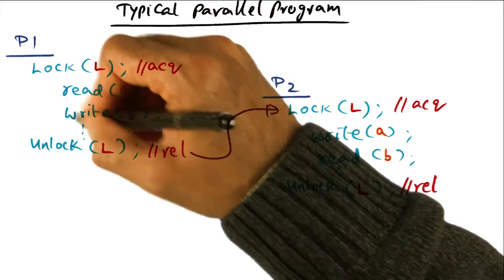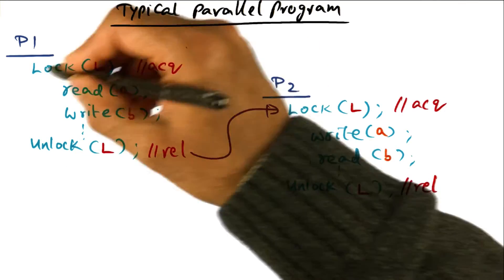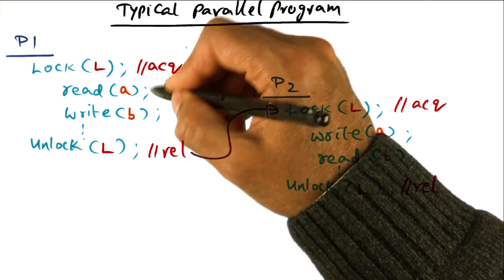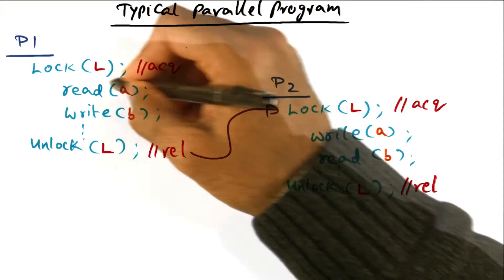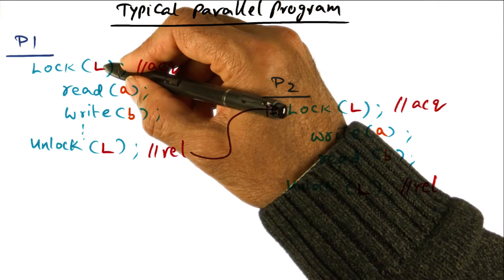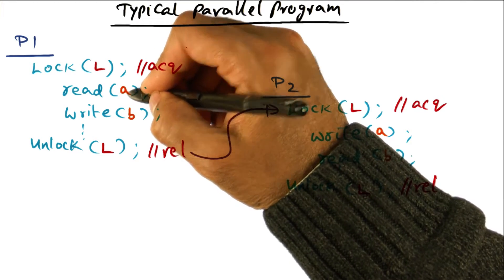Once I'm done with whatever I want to do with these shared variables, I'll unlock indicating that I'm done, and this is my critical section. So within the critical section, I'm allowed to do whatever I want on these data structures that are governed by this particular lock, because that is an association I, as the programmer, has made in writing my parallel program.